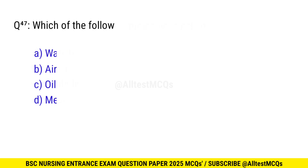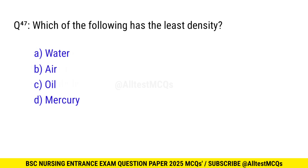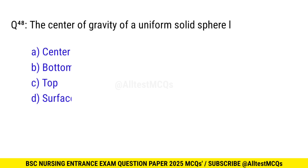Question No. 47: Which of the following has the least density? The right option is D: Air. Question No. 48: The center of gravity of a uniform solid sphere lies at? The correct option is A: Center.